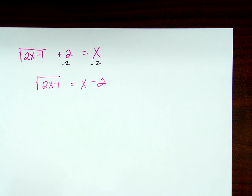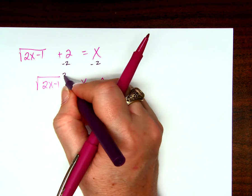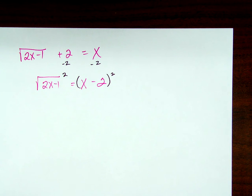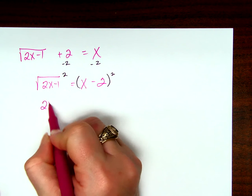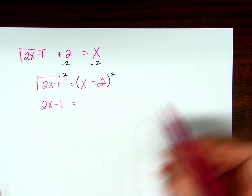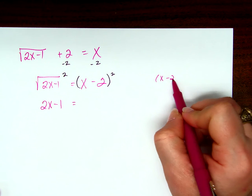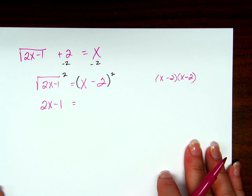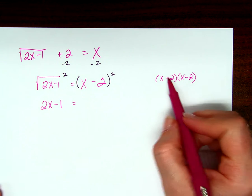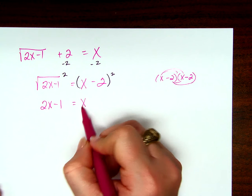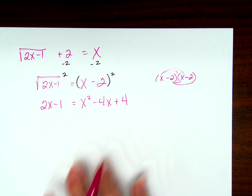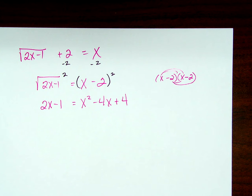So, the square root of two x minus one is going to equal x minus two. Again, I got to get rid of the radical. It's a square root, so I square both sides. Keep in mind that I actually square both sides, the whole sides, which gives me on the left hand side, two x minus one, and on the right hand side, it gives me x minus two times x minus two, not just x squared plus four, right? But I have to distribute. Very good. People forget that a lot, and it makes me sad.